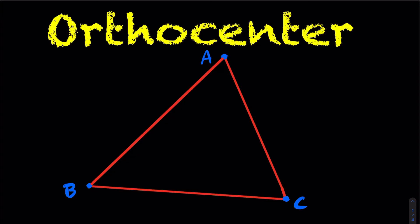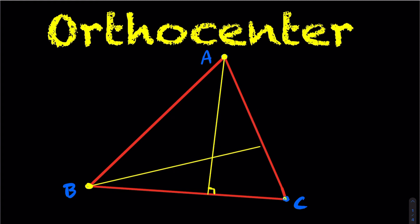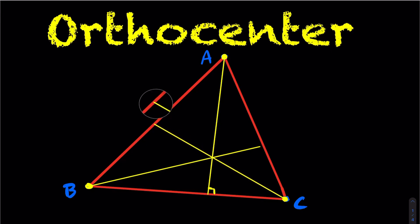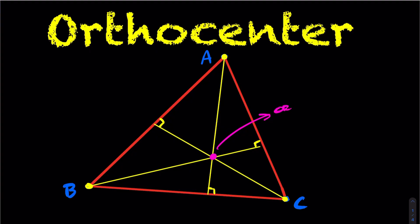In this case, my orthocenter is going to use altitude line A, which would look something like this. Altitude line B goes from vertex B to the opposite side, meeting at 90 degrees. Lastly, altitude line C goes from the opposite side, again meeting at 90 degrees. Where all three of these altitude lines cross, we have our orthocenter.